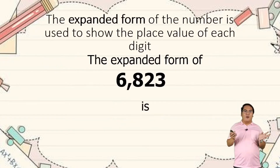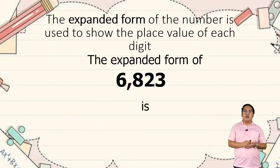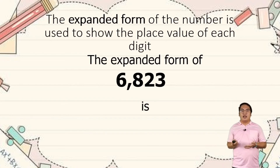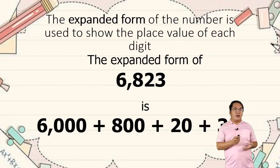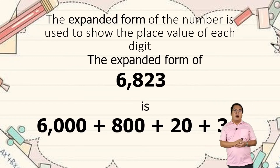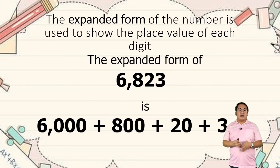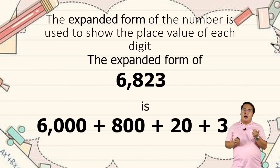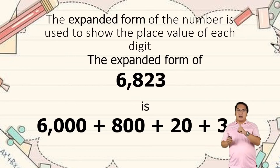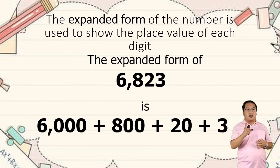Now, expanded form. An expanded form of a number is used to show the place value of each digit. The expanded form of 6,823 is 6,000 plus 800 plus 20 plus 3. If you look at our examples, they just separate the number into their place values. So 6,000 is 6,000 itself, 800 is 800, 20 is 20, and 3 is the ones digit.